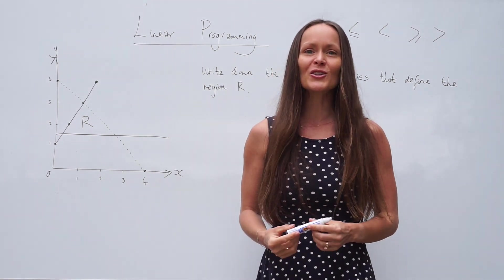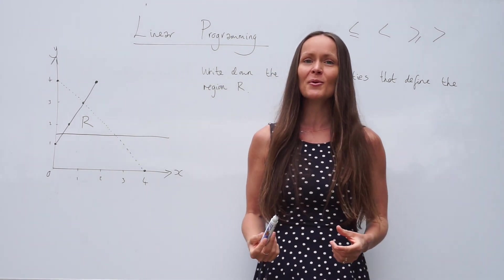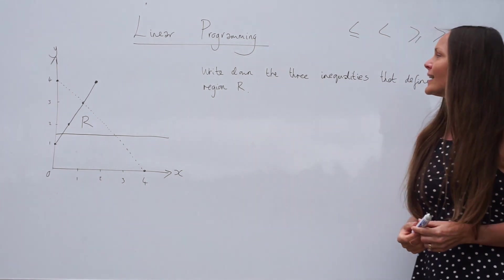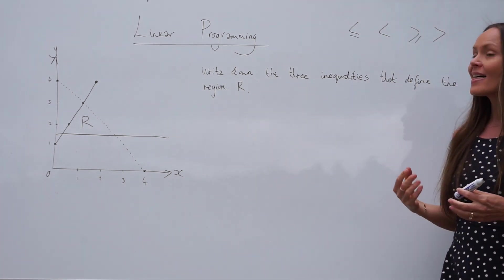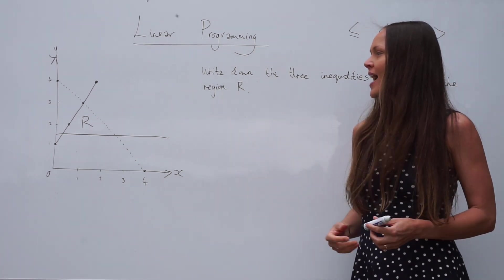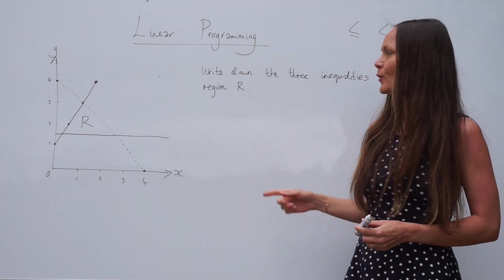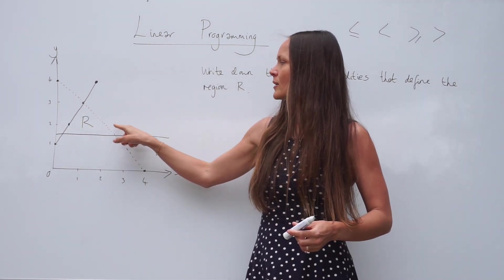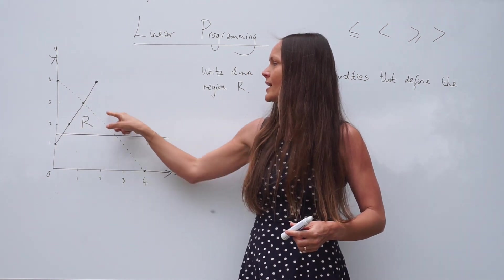Hey guys, in this lesson I'm going to show you a linear programming exam question. So we have to write down the three inequalities that define the region R. And the region R is shown on this graph here. It's inside this triangle, separated by these three straight lines.